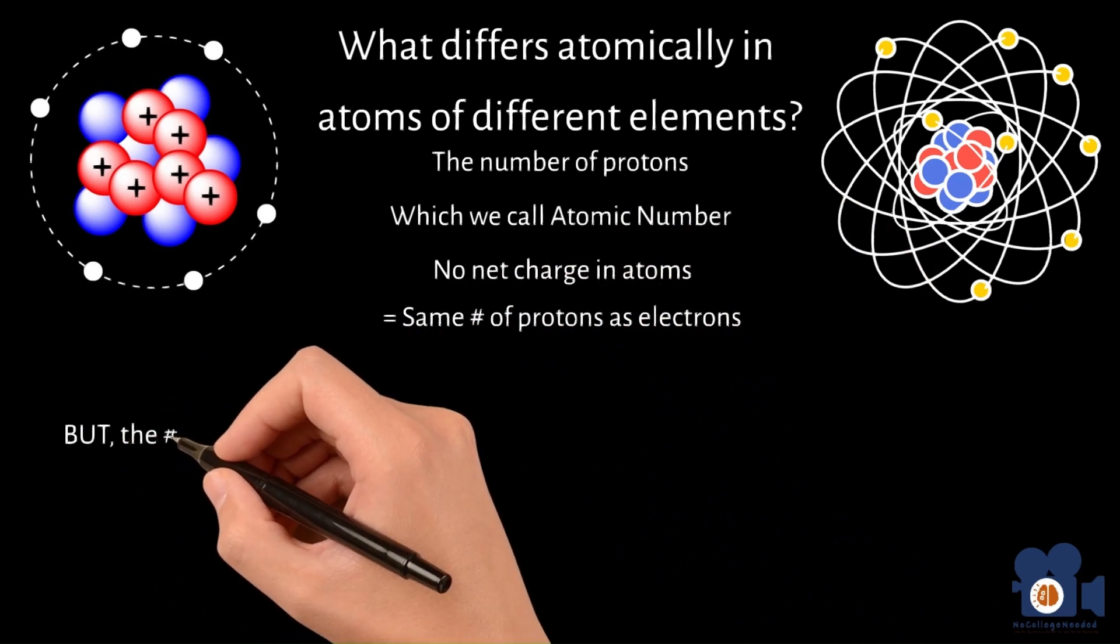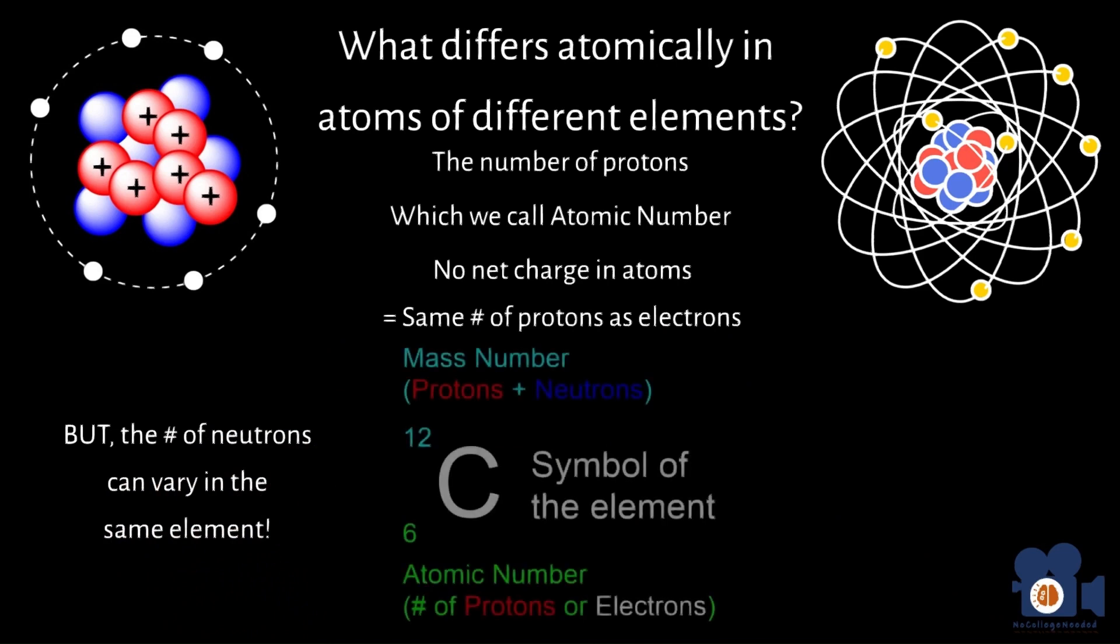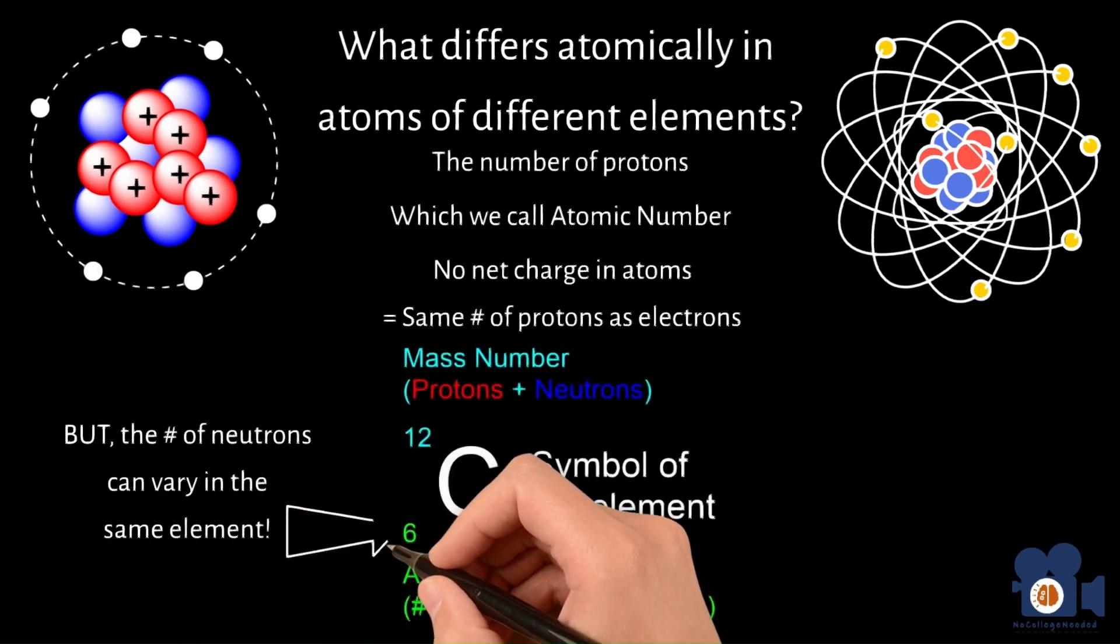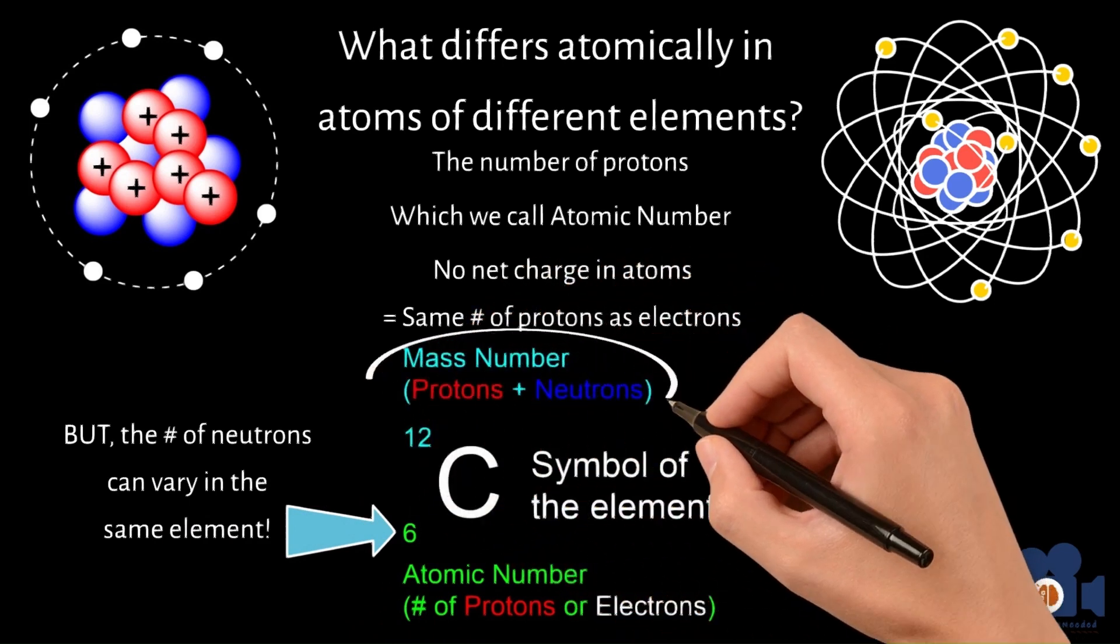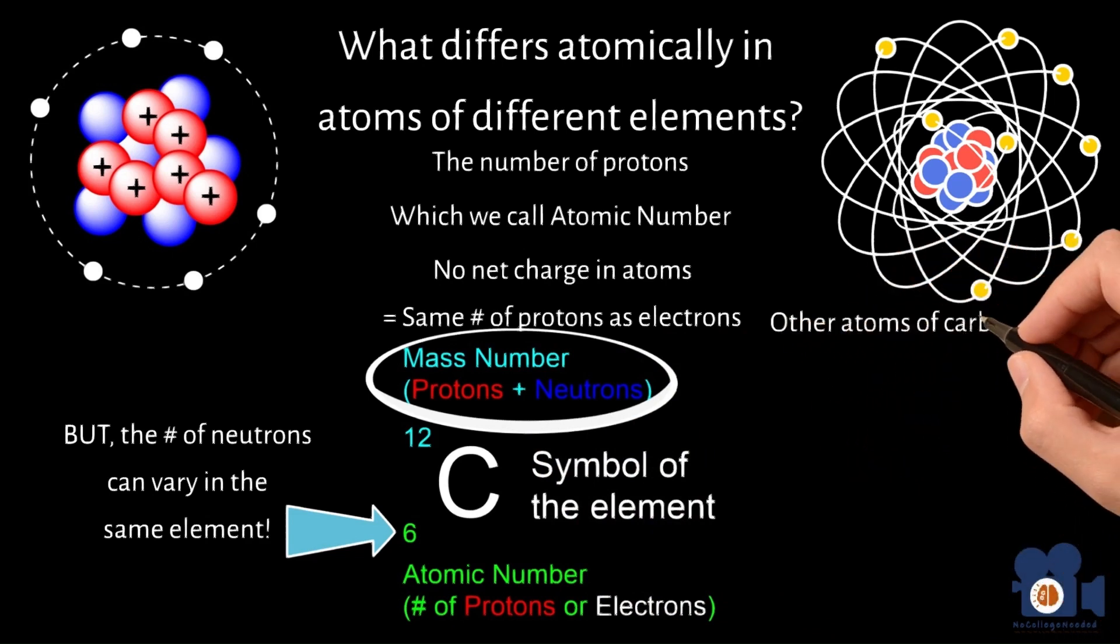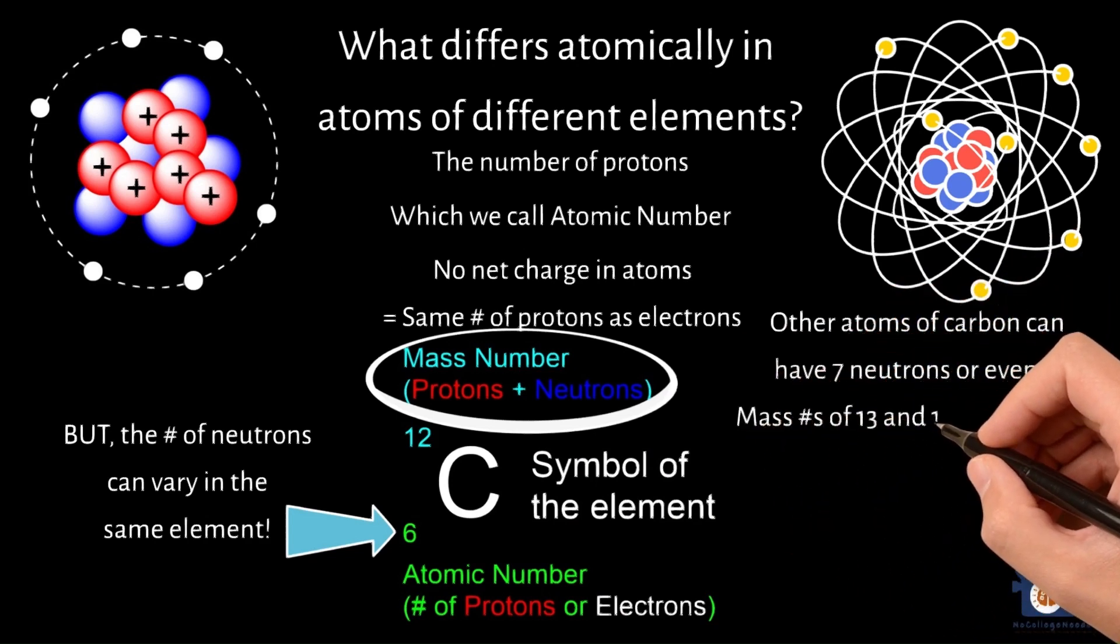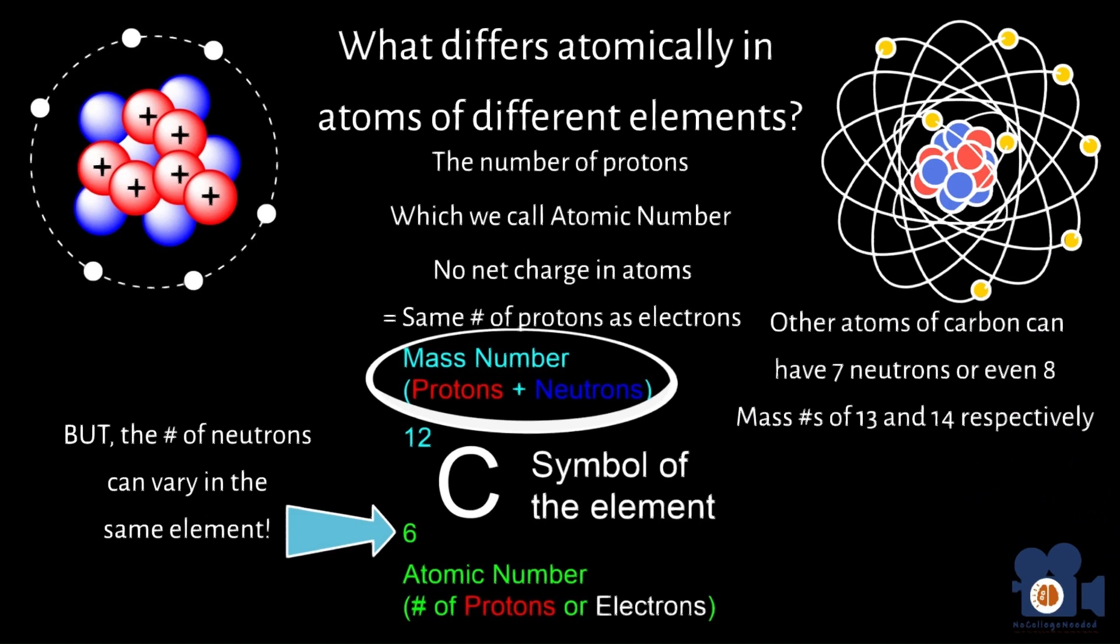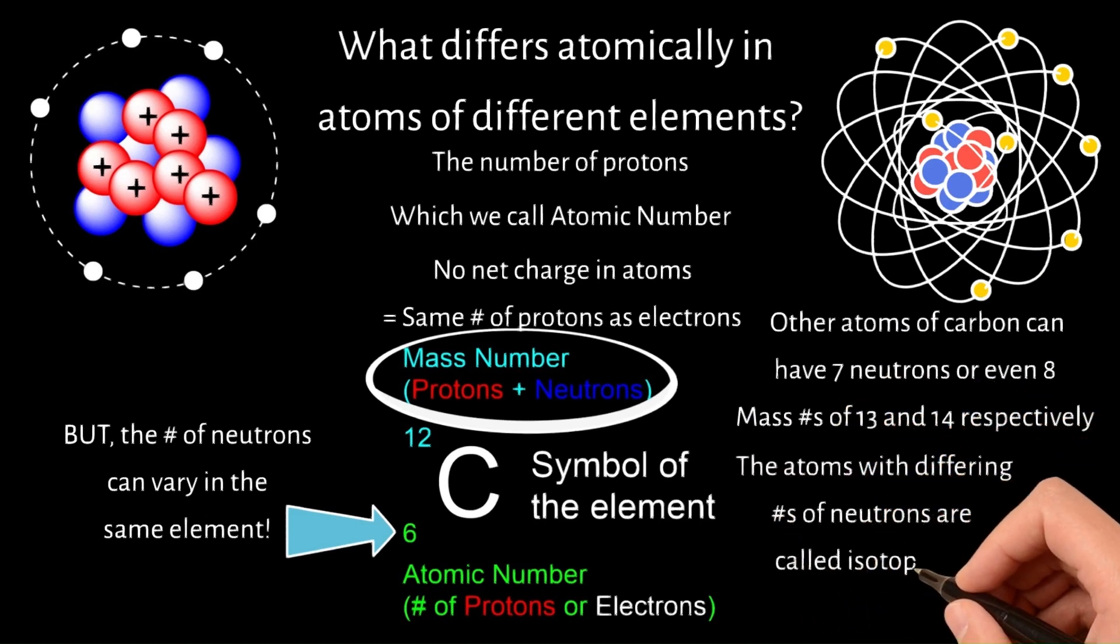However, the number of neutrons of an element can vary. For example, with carbon, there are 6 protons and in most cases 6 neutrons. Since the protons and neutrons weigh approximately the same, the relative mass can be stated as 12, 6 plus 6, which we call the mass number. Other atoms of carbon can have 7 neutrons or even 8, which would give the mass numbers 13 and 14 respectively. The atoms with differing number of neutrons are called isotopes of each other.